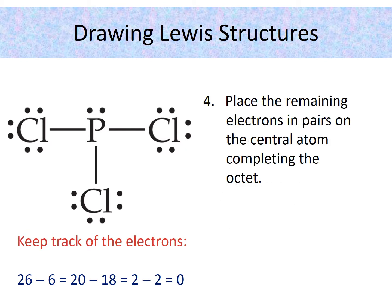Once we have completed the peripheral octets, the next thing is to place the remaining electrons. So for us, that was two in this structure, two electrons on the central atom. And now we would check to make sure the central atom has an octet. And there's our structure. We're done.